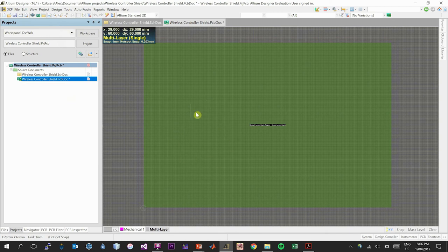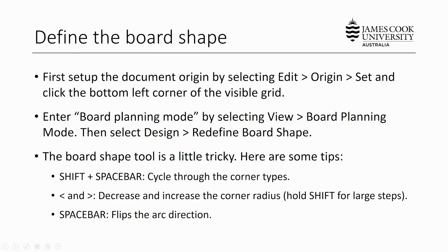The Redefine Board Shape tool is a little tricky to use. A couple of tips: if you press Shift and Spacebar while using that tool, it will cycle through the different corner types available. You can press the less-than and greater-than keys to decrease and increase the corner radius size. Press Shift to increase and decrease with larger steps. Finally, press Spacebar to flip the direction of the arc. With these three tips you can define any shape.